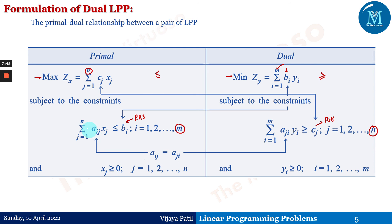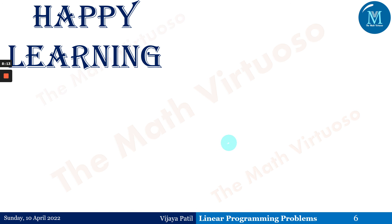One important thing to note: Aij in the primal is Aji in the dual — meaning the constraint coefficients are transposes of each other for the primal and dual. We will have a detailed discussion exploring everything about duality in LPP. I hope you have understood this introduction. I am keeping the sessions short so you get more from each small video. Thank you so much. Happy learning.